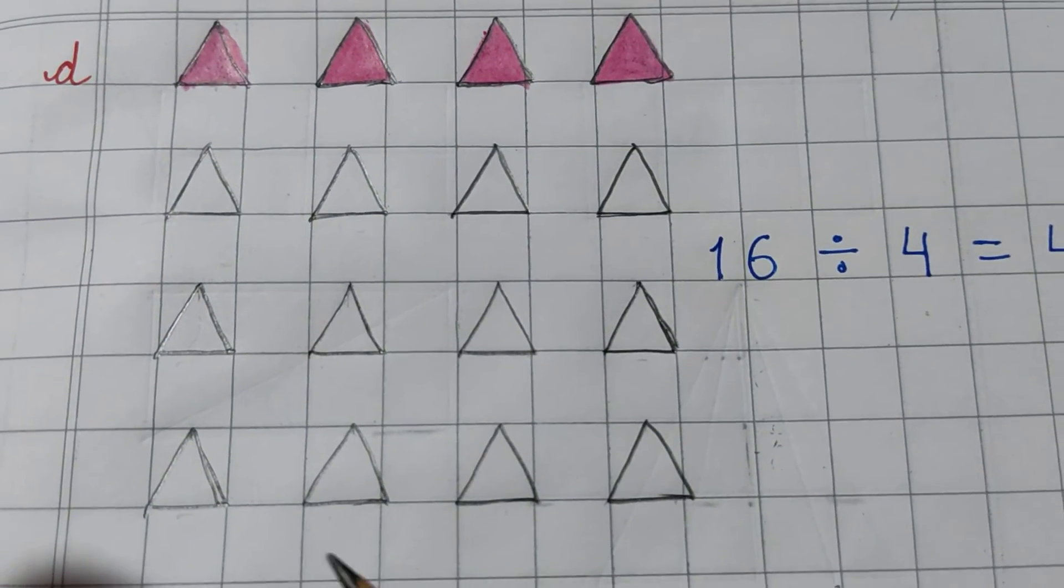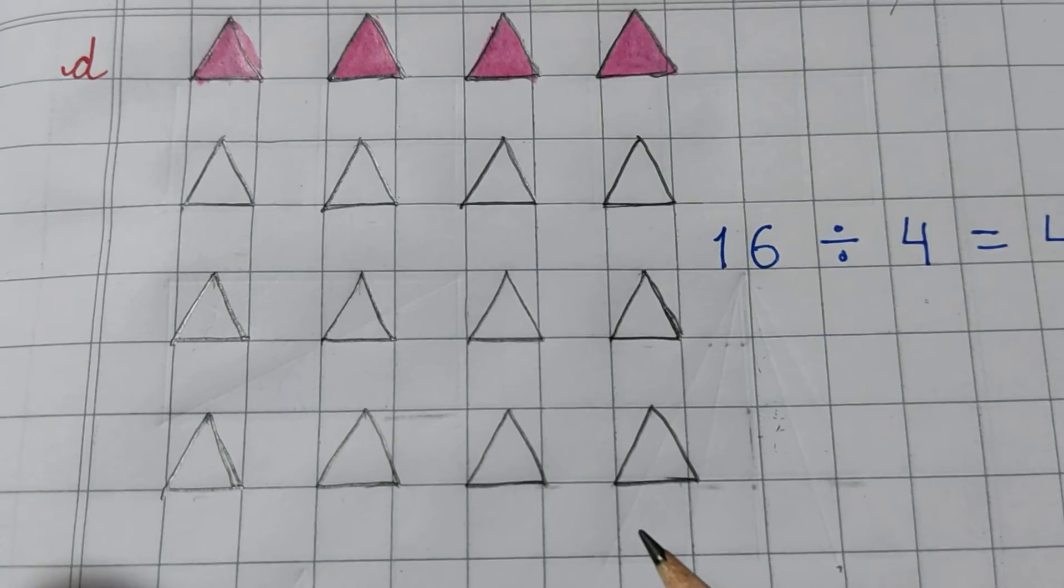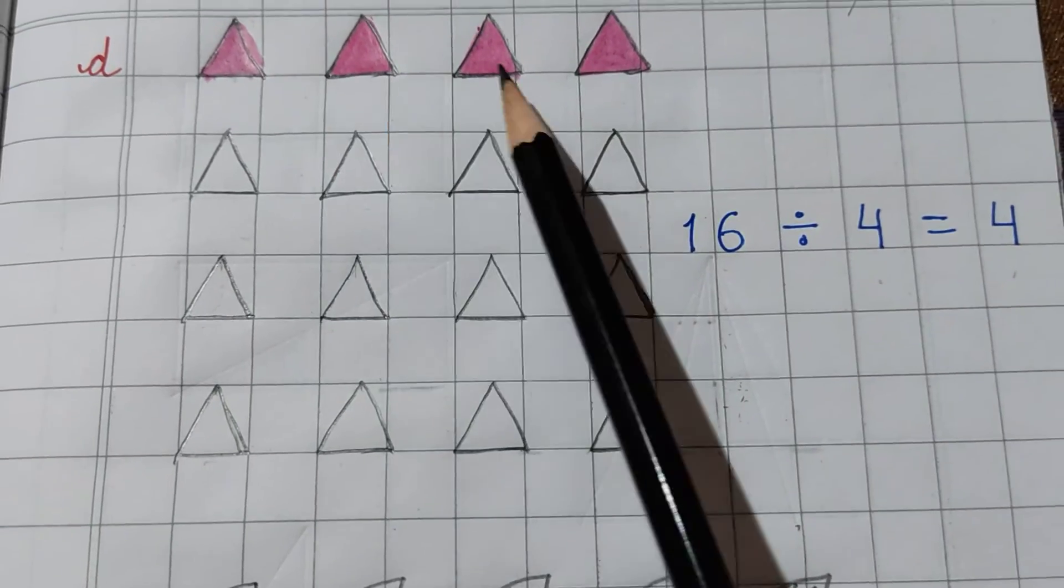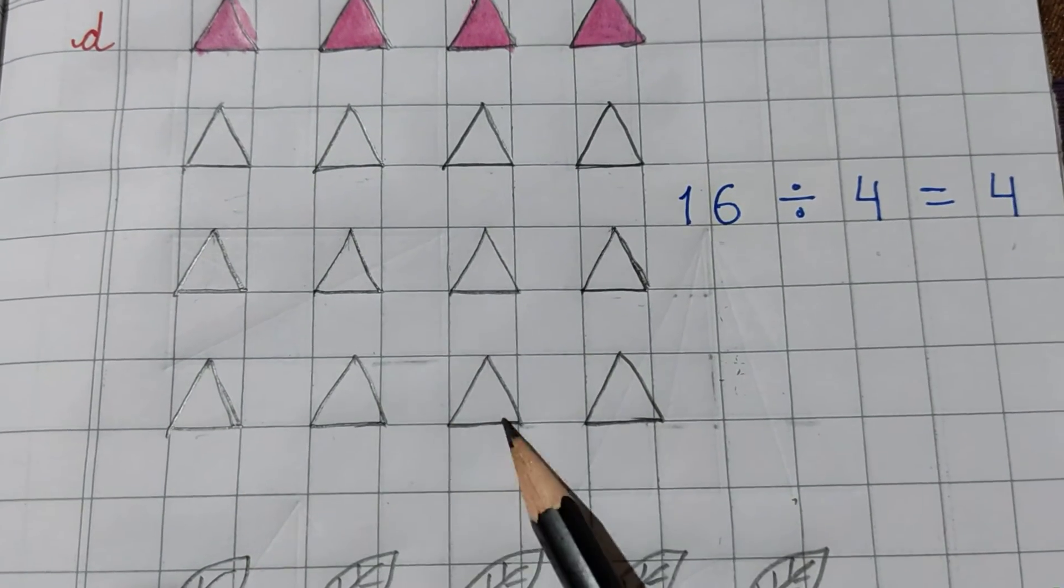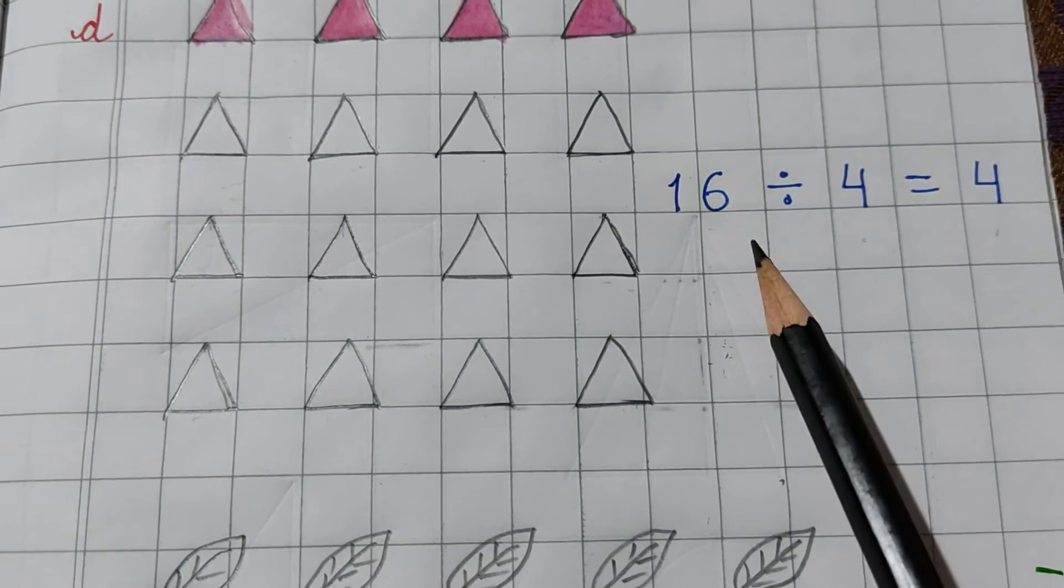In D part, I have taken some triangles here. Let's count. 1, 2, 3, 4, 5, 6, 7, 8, 9, 10, 11, 12, 13, 14, 15, 16. These are 16 triangles.